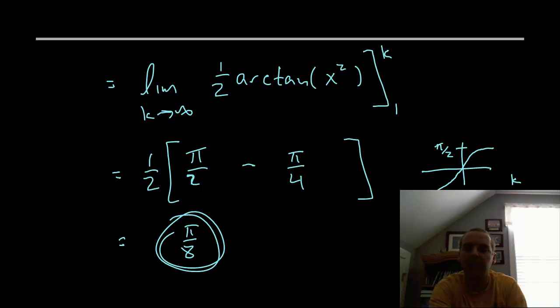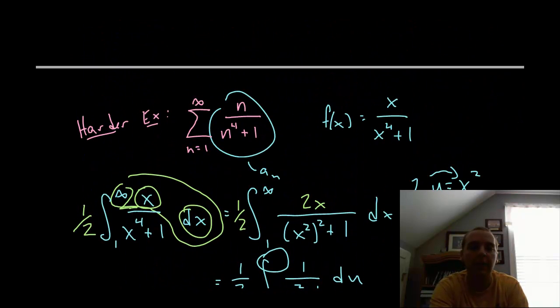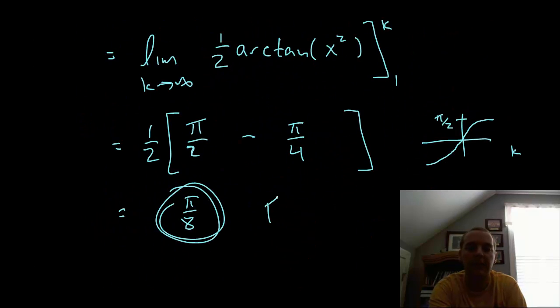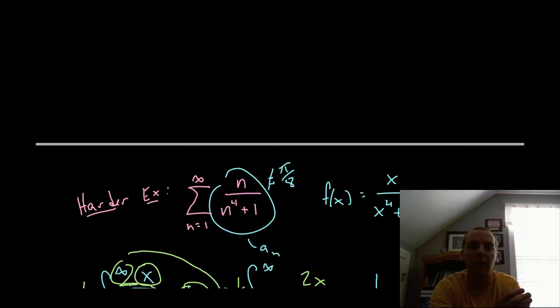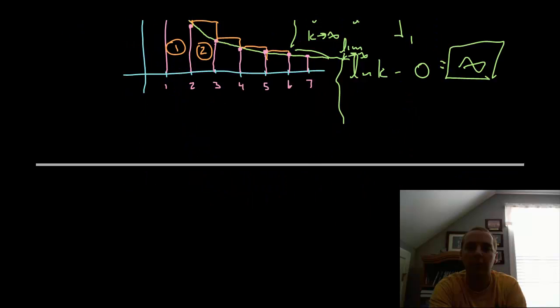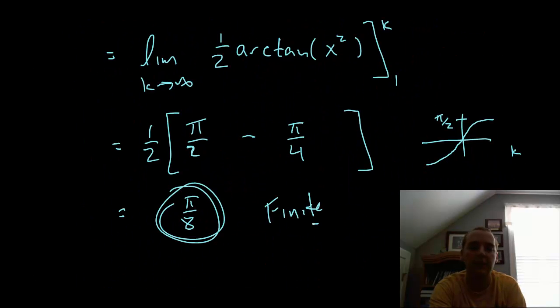So one half π minus one fourth π is one fourth π times a half would be π over 8. Now what does this mean? This does not mean that your series adds up to π over 8. That's not what I'm saying. The only thing I'm interested in is the fact that this is finite. That's the big deal, because remember there was some error involved between the actual versus the approximation. But what it is enough to tell me, since this is finite, that means that it converges.